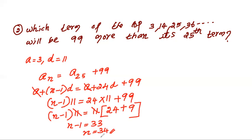So the 34th term will be 99 more than its 25th term. Try to understand the concept: An equals A25 plus 99, meaning the required term equals the 25th term plus 99. I hope you are okay with question number 2.